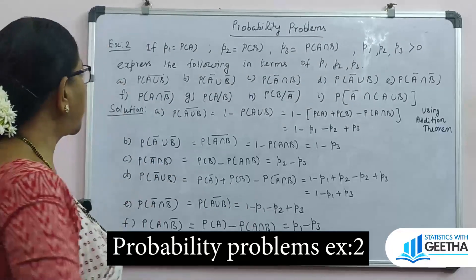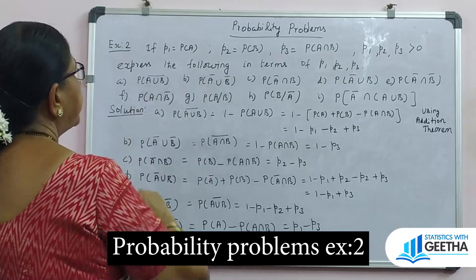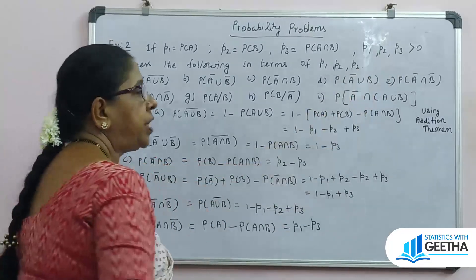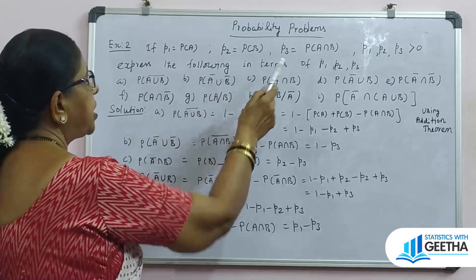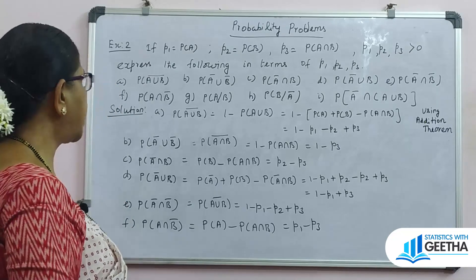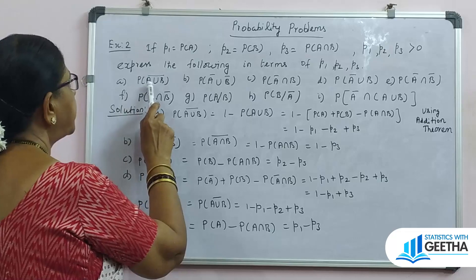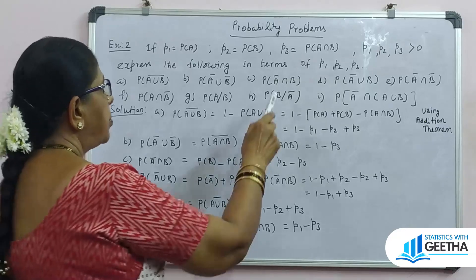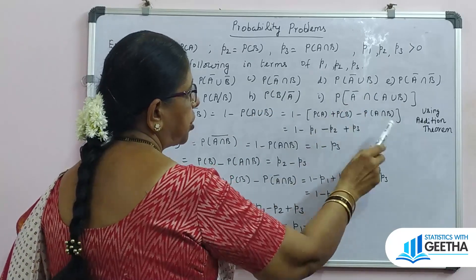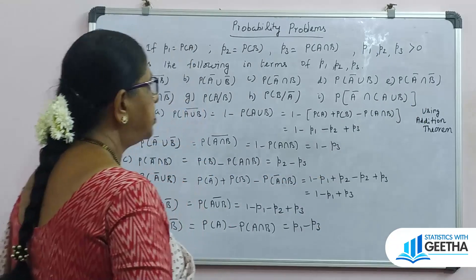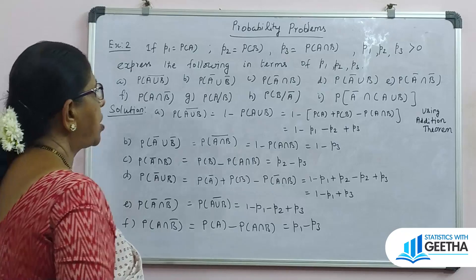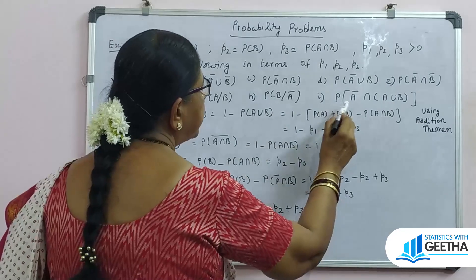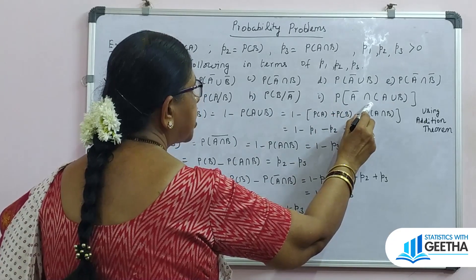Now the exercise: let P1 equal probability of A, P2 equal probability of B, P3 equal probability of A intersection B, where P1, P2, P3 are greater than 0. Express the following in terms of P1, P2, and P3: (a) probability of (A union B) complement, (b) probability of A complement union B complement, (c) probability of A complement intersection B, (d) probability of A complement union B, (e) probability of A complement intersection B complement, (f) probability of A intersection B complement, (g) probability of A given B, (h) probability of B given A complement, (i) probability of A complement intersection (A union B).